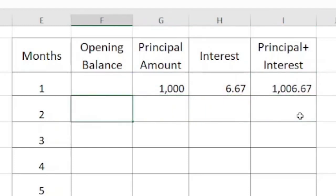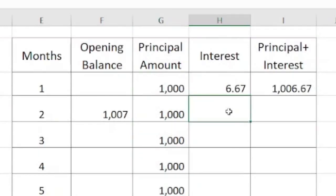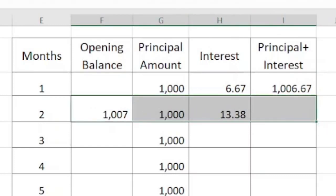Now in the next month, the opening balance will be this one. So I will select this and bring it to the second month opening balance. The 1000 per month will be constant, so I will just drag it as it is constant for each of the 18 months. Now here you have to be careful. The interest for the second month will be the sum of opening balance plus principal times 8% divided by 12. So it comes to 13.38. And what will be the principal plus interest? I will select this and click on auto sum so that the total will be calculated.